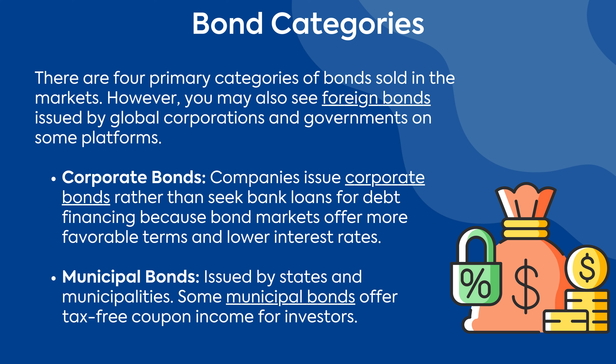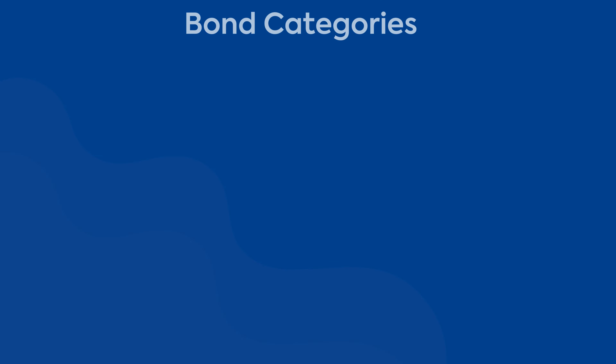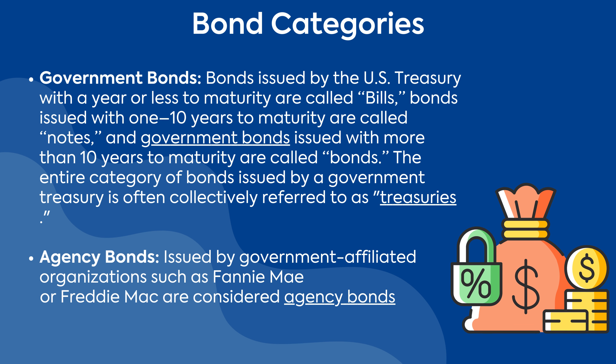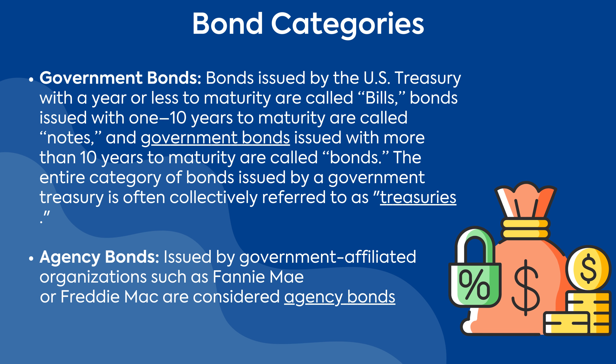Municipal bonds: issued by states and municipalities, some municipal bonds offer tax-free coupon income for investors. Government bonds: bonds issued by the U.S. Treasury with a year or less to maturity are called bills. Bonds issued with one to ten years to maturity are called notes, and government bonds issued with more than ten years to maturity are called bonds.